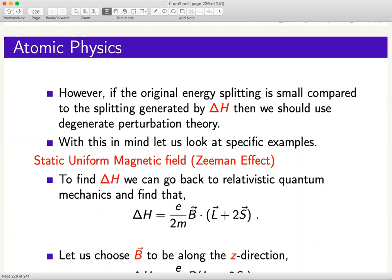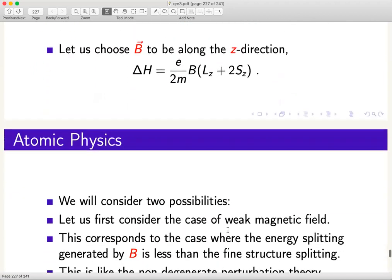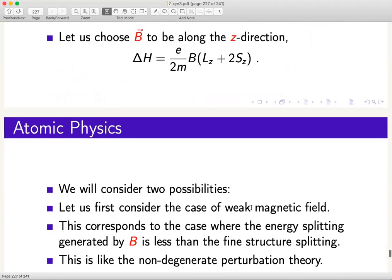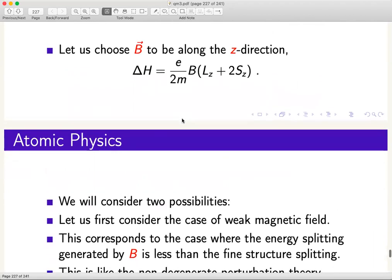Today we look at the effect of an external uniform magnetic field and study how the spectrum changes if you apply a uniform magnetic field in the z direction. Since magnetic field is a vector, it has a direction and the most suitable direction to study is the z direction. From the non-relativistic Foldy-Wouthuysen expansion, the magnetic field couples to L plus 2S, so that would be the perturbation Hamiltonian.